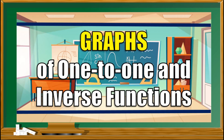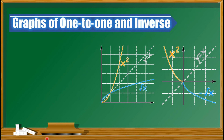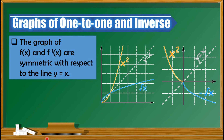To begin with, let us identify the relationship that exists between the graphs of one-to-one and inverse functions. The graph of f(x) and f⁻¹(x) are symmetric with respect to the line y = x. Take a look at these two examples. As we can see on this first graph, we have x² and its inverse is √x. These two graphs are symmetrical with the line y = x, which is an identity function.